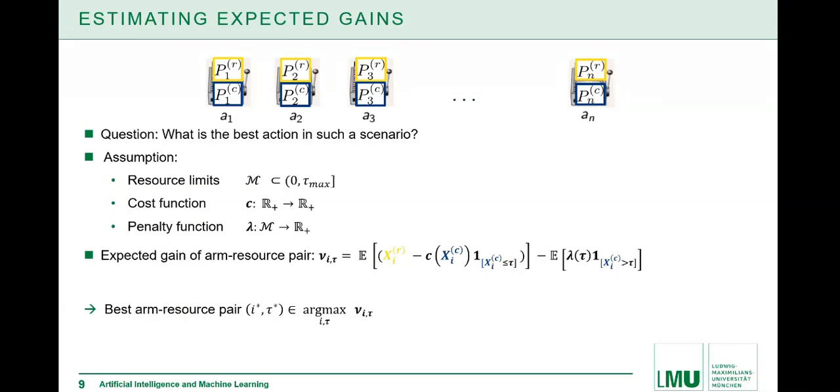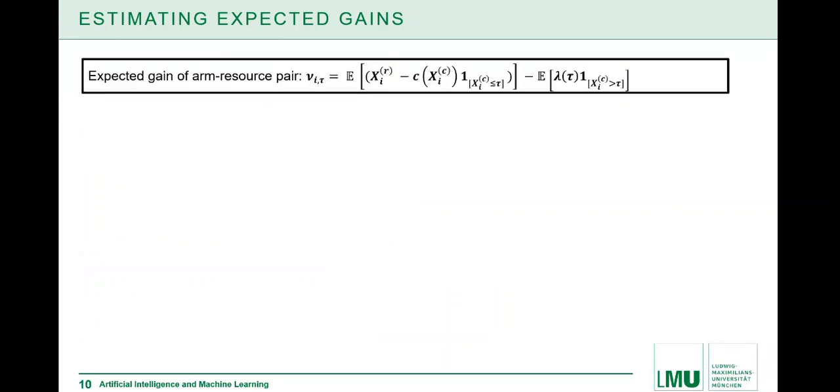We have this expected gains definition, which is specifying whether an action is optimal or suboptimal. So in order to do an optimal action, we need to find out how these expected gains are looking for different actions. So we need to estimate those. Due to time constraints, I cannot get into the details for the estimate we have for the expected gain. It's consisting of two parts. The one part is estimating the first expected value we see there. This hat GIT is for the first expected value in the expected gain, and this hat lambda term is for the second part.